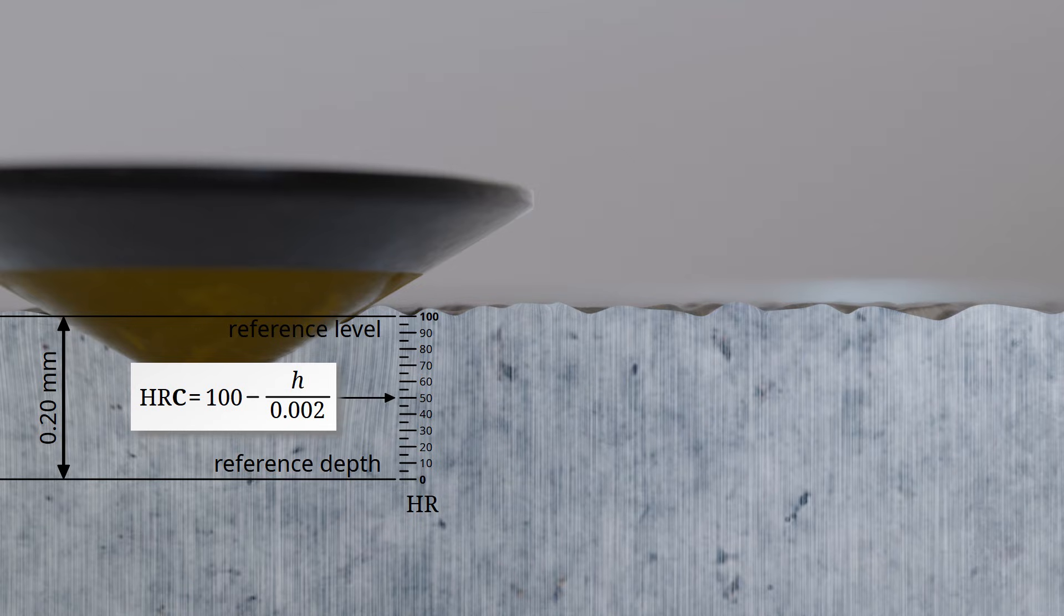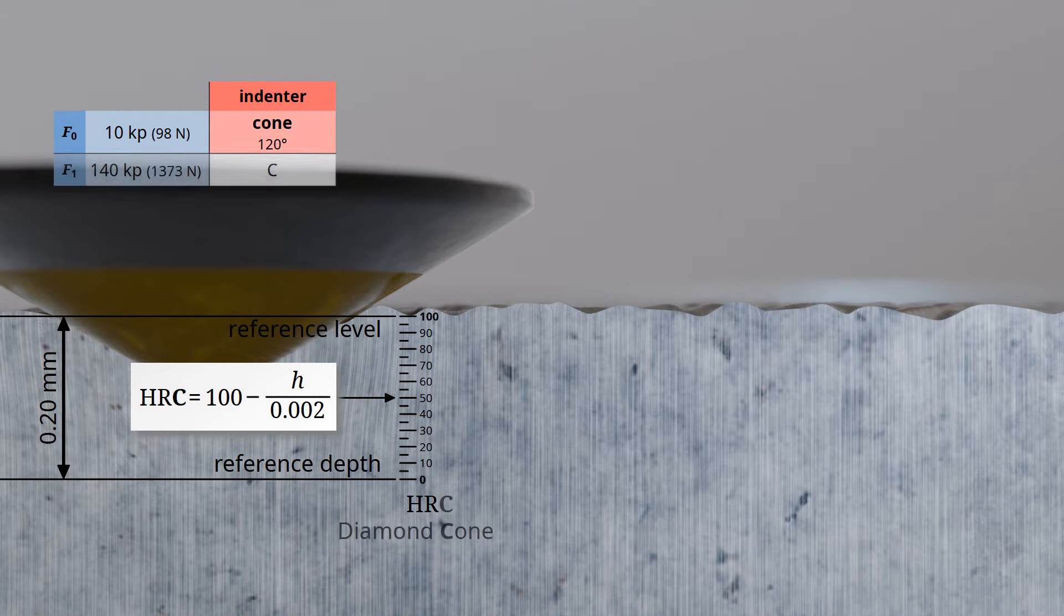With the exception of special procedures, the preload is 10 kilopons, equivalent to 98 newtons. Depending on the specific test variant, different test loads are applied. In the so-called test variant scale C, the sample is subjected to a test load of 140 kilopons, which corresponds to 1373 newtons.